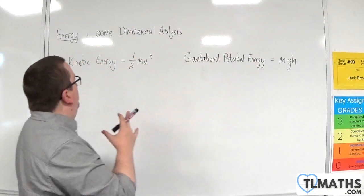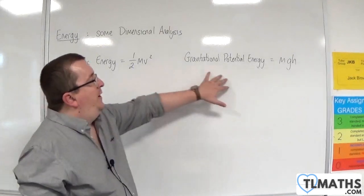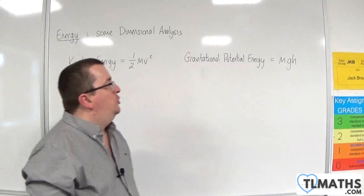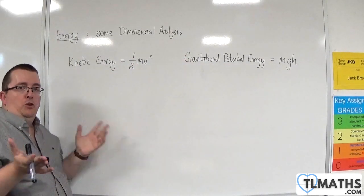So, here are the two formulas. We've got kinetic energy is half mv squared, and gravitational potential energy is mgh. And I'm saying these are both energies. They are both measured in joules.